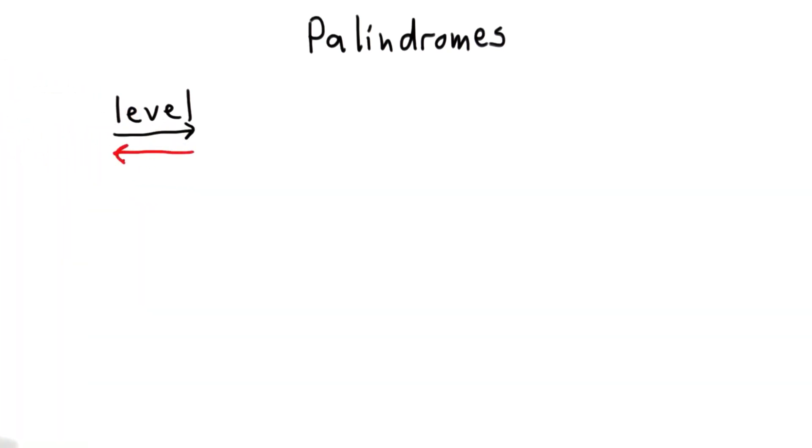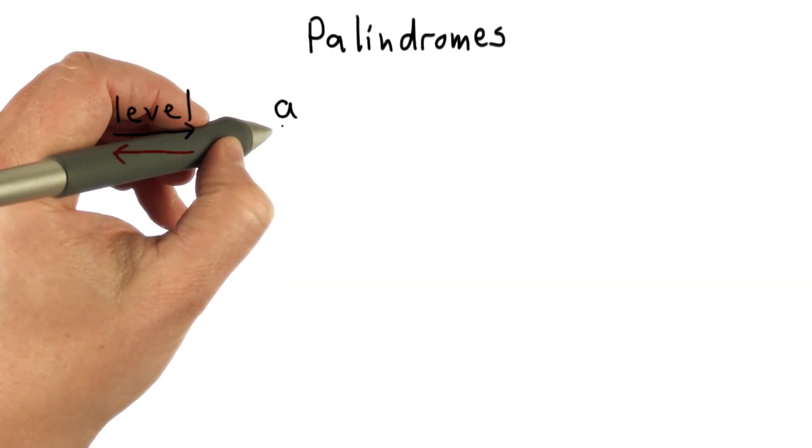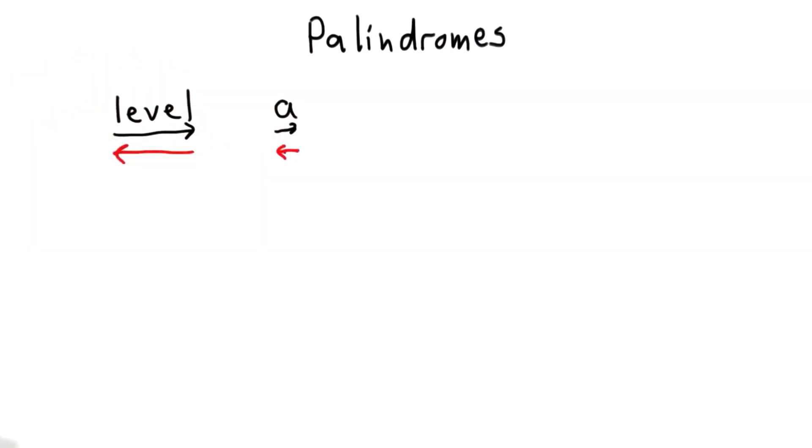Another example of a palindrome would be the single letter A. If we read A forwards, we get A. If we read A backwards, we also get A. In fact, any single letter must be a palindrome.